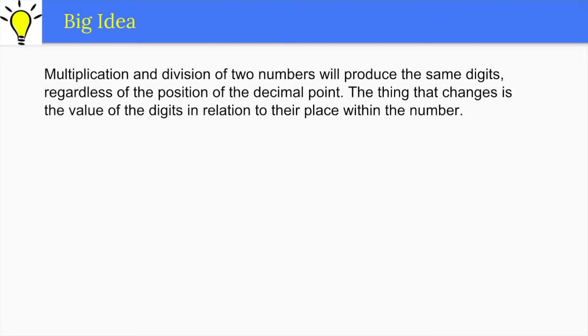The big idea of this unit is that multiplication and division of two numbers will produce the same digits regardless of the position of the decimal point. The thing that changes is the value of the digits in relation to their place within the number.